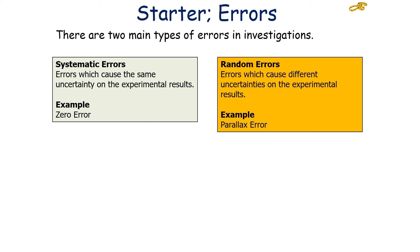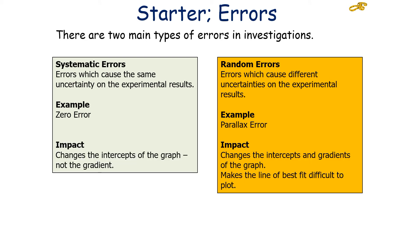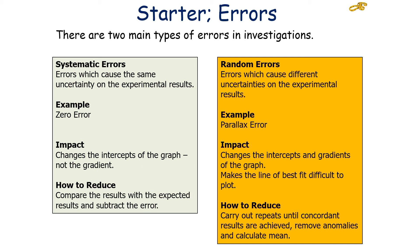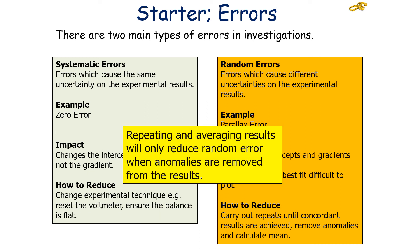An example of a systematic error is a zero error, while an example of a random error is a parallax error. A systematic error changes the intercept of the graph but not the gradient, whereas a random error changes both the intercept and the gradient, making the line of best fit difficult to plot. To reduce a systematic error, change your experimental technique — for example, reset the voltmeter or ensure the balance is flat. To reduce a random error, carry out repeats until concordant results are achieved, remove anomalies, and calculate a mean average. You could also reduce systematic errors by comparing results with an expected value and subtracting the error. Note that repeating and averaging only reduces random errors when anomalies are removed.